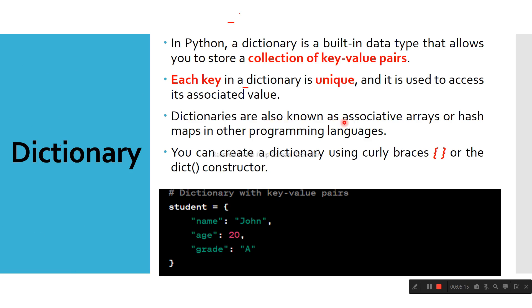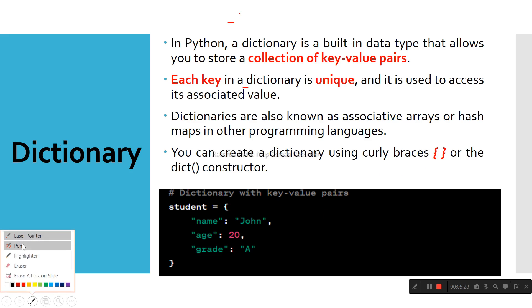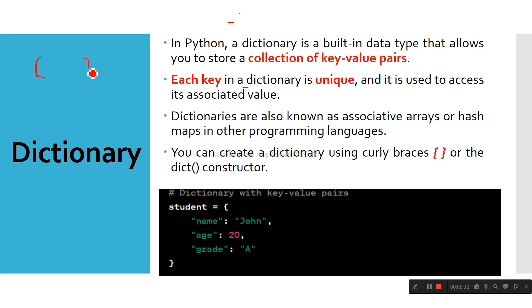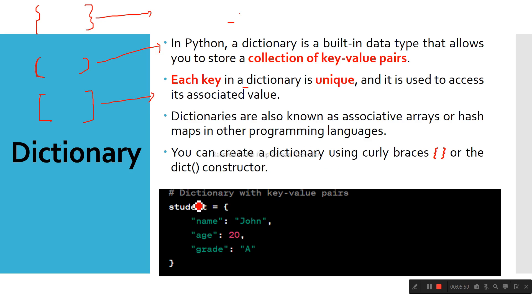So this is how we can use dictionary in Python. To create a dictionary, we need curly braces. You can write in the comment section — we've seen round brackets for tuples, square brackets for lists, and now curly braces for dictionary. To create one: let's say we have a variable 'student' equal to an opening curly brace and closing curly brace.